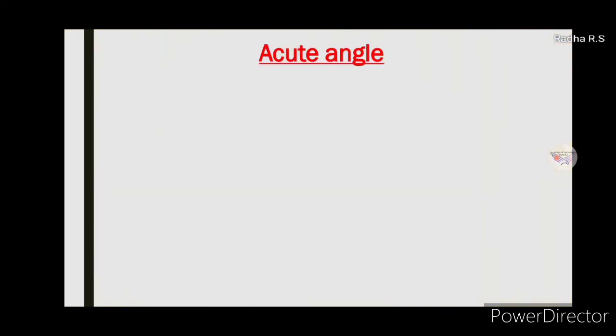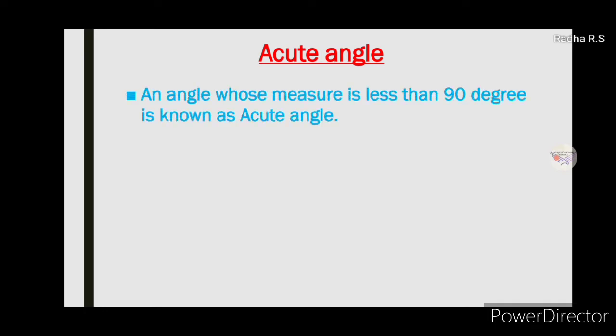Now we are going to learn about acute angle. What is acute angle? An angle whose measure is less than 90 degrees is known as acute angle.